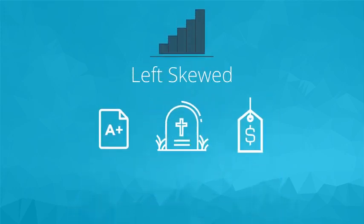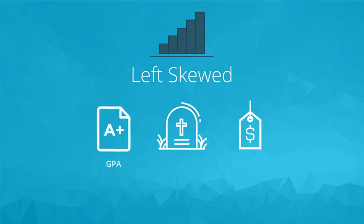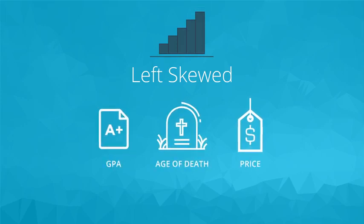Common data that follow left skewed distributions include GPAs, the age of death, and asset price changes.